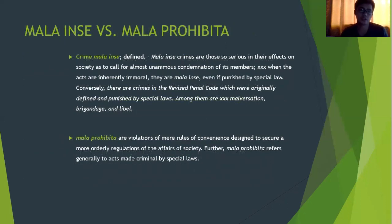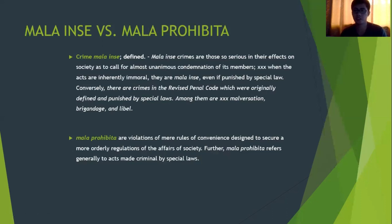The difference between mala in se and mala prohibita: mala in se crimes are wrong from their very beginning or from their nature, and are covered under the Revised Penal Code. Mala prohibita crimes, on the other hand, generally refer to acts made criminal by special laws. Originally these acts are not evil in themselves, but the authority has made them criminal for the observance of the common good of society.